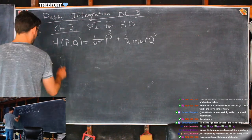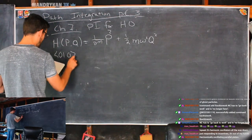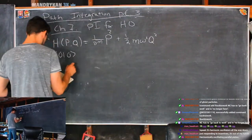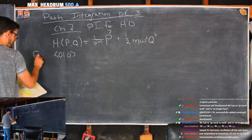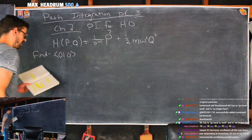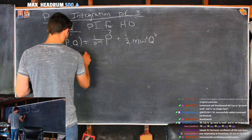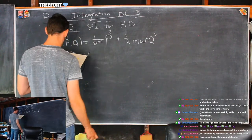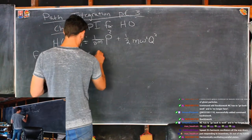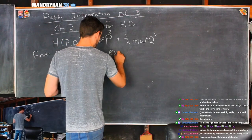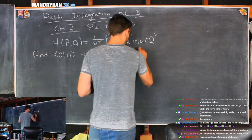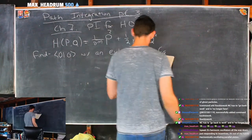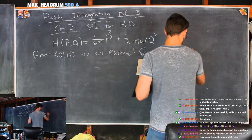Now let's actually do some path integration. We want to find what it means to go from the ground state to the ground state with some external force F of Q in the harmonic oscillator.